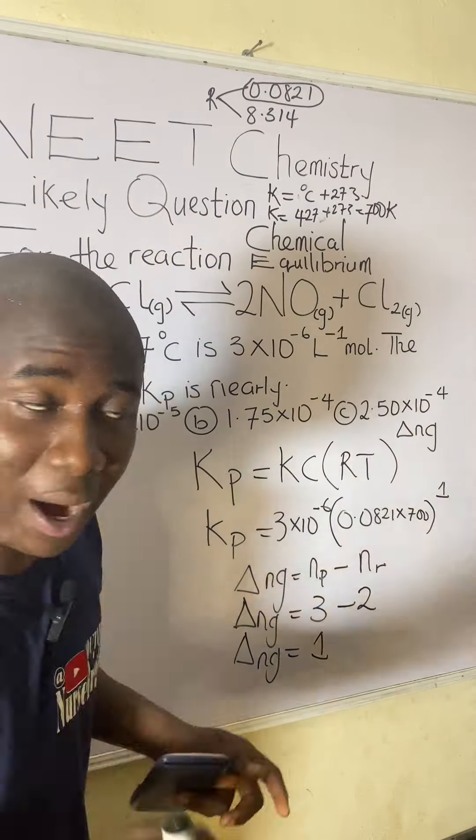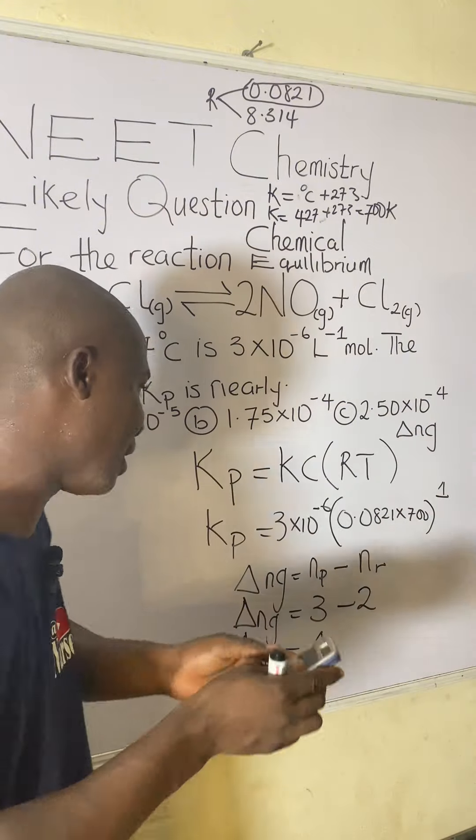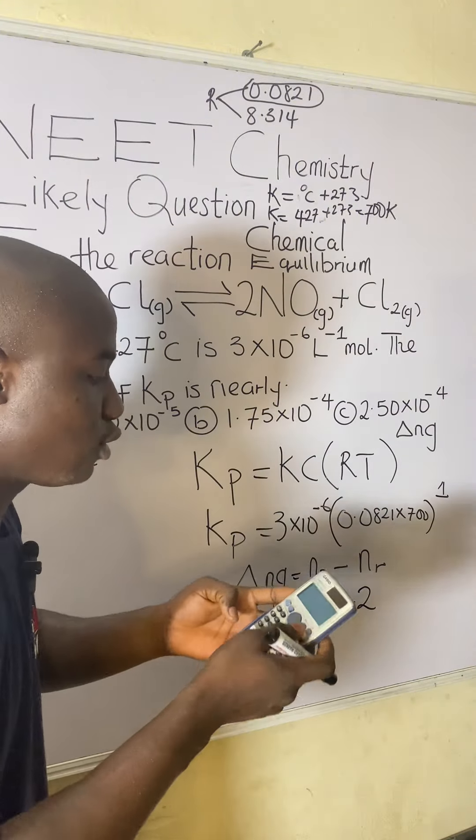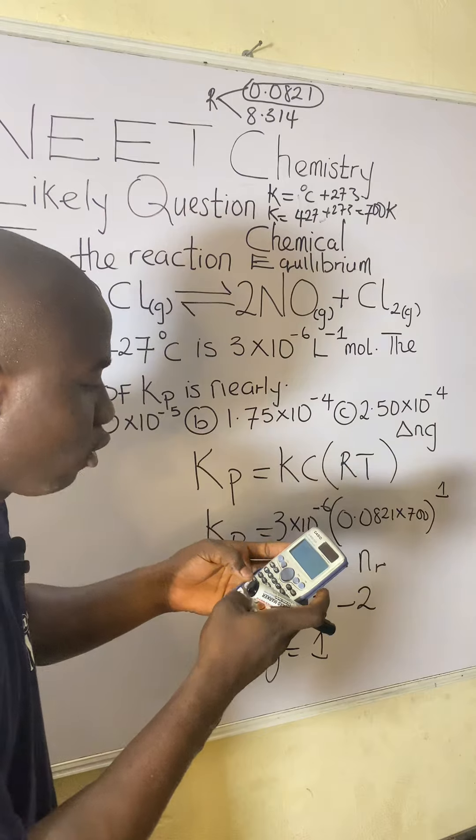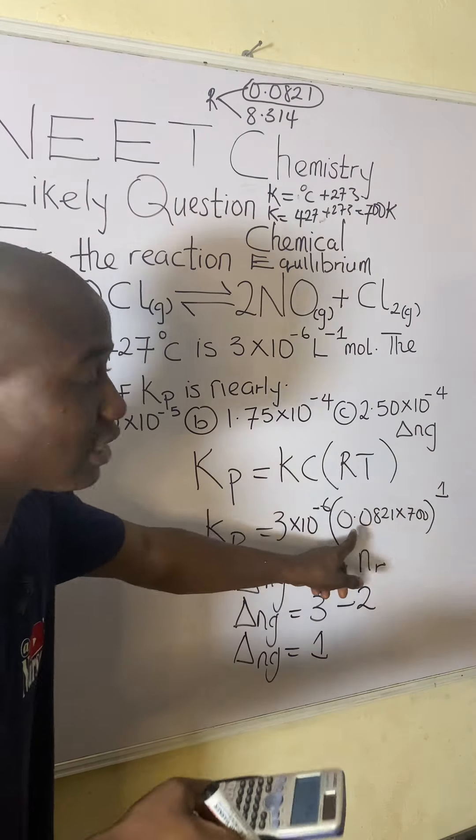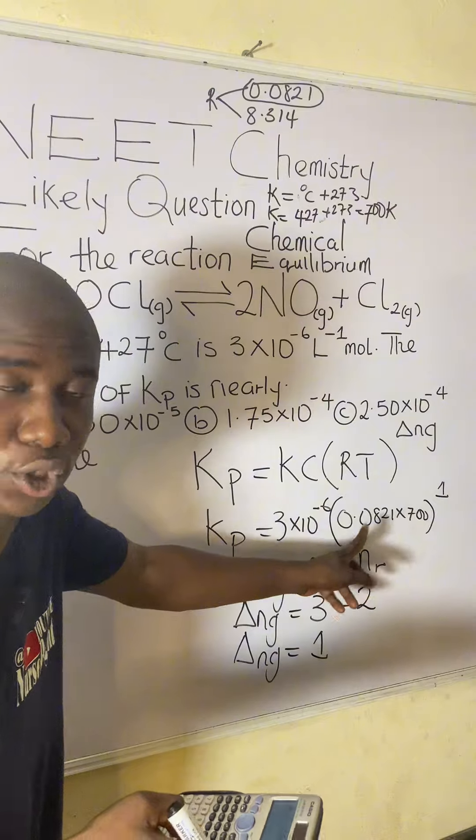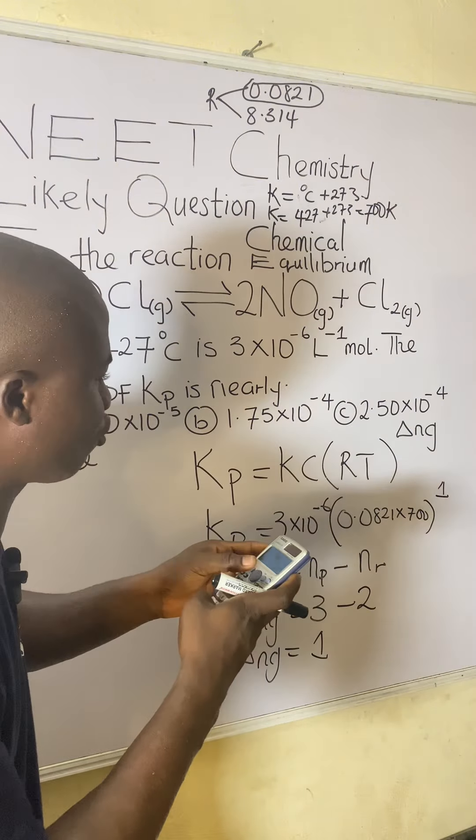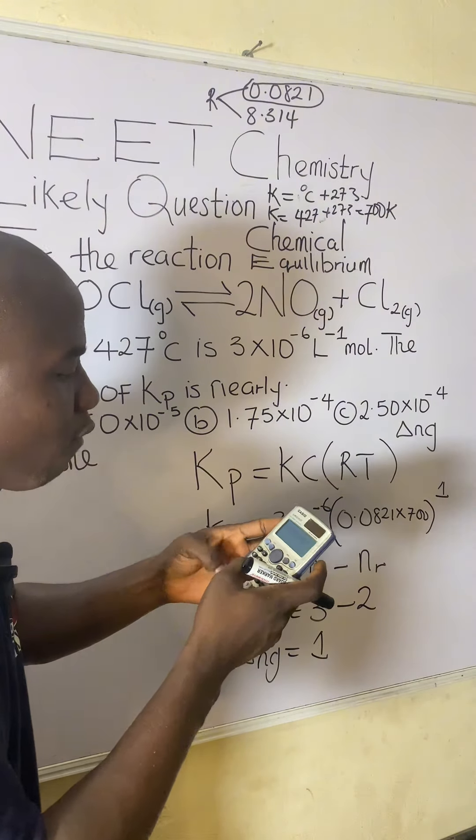So let's input the parameters into the calculator to get the answer without stress. It's very easy. So first of all, write, three times 10 raised to minus six, open bracket, 0.0821. Note this constant, that is what you are using to solve questions on that aspect, times 700, close bracket, all raised to power of one.